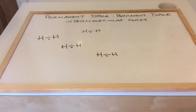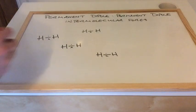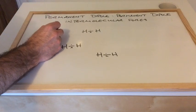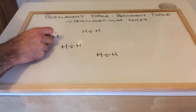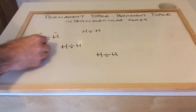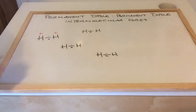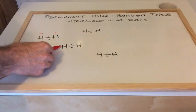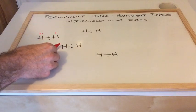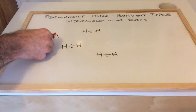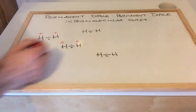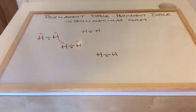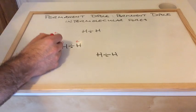So if we instantly froze time we'd have a slightly negative end and a slightly positive end. The electron density may be slightly on the right hand side — that's what we call the instantaneous dipole. What that does is it induces a dipole on a neighbouring molecule. So this delta minus here would repel the electron density, giving delta minus and delta plus. You get this very weak intermolecular force between these molecules, and that's the van der Waals force.